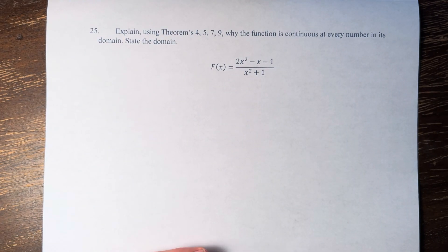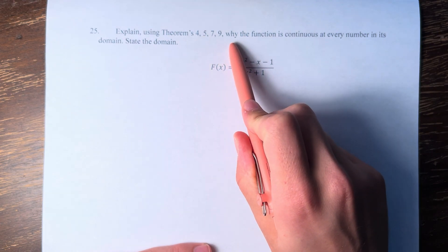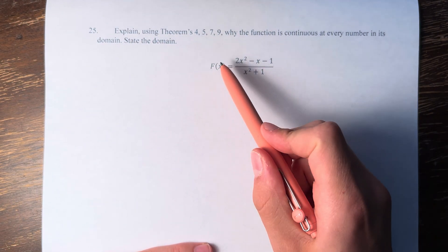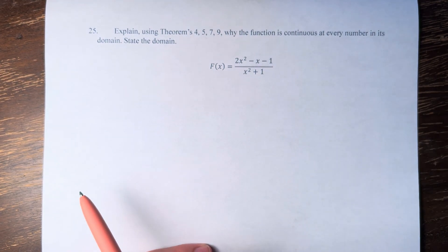Hello and welcome back to another video. In this problem, we're asked to explain using theorems 4, 5, 7, and 9 why the function is continuous at every number in its domain and to state the domain. Here we have f(x) equals 2x² minus x minus 1 over x² plus 1.